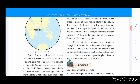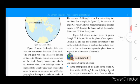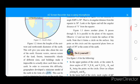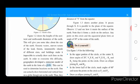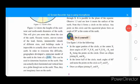The first explanation. Figure 1.2 shows the length of the east-west and north-south diameter of the earth, which will give you some idea about the size of the earth. Oceanic water, uneven nature of the land, forests, innumerable islands of different sizes, and buildings make it impossible to actually draw such lines on earth. In order to overcome this difficulty, geographers developed a miniature model of the earth in the form of a globe. This can be used to determine location on the earth. One can actually draw horizontal and vertical lines on the globe, though not on the earth. Thus, they are imaginary lines on the earth.